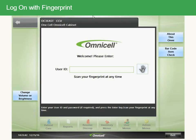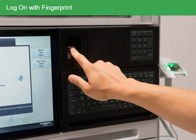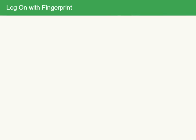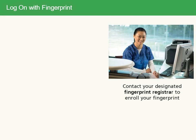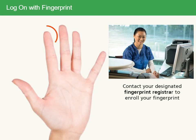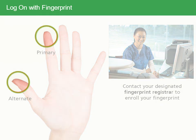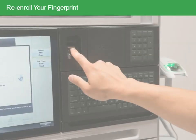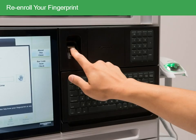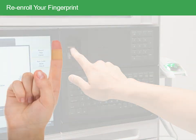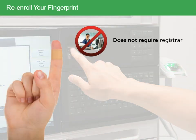Let's have a closer look at logging in with your fingerprint. If you have never been enrolled, contact your designated fingerprint registrar to help you enroll your fingerprints. You can enroll two fingers — a primary and an alternate — and you can use either finger to log on; you are not required to use both. You may need to re-enroll your fingerprint if, for example, you cut or burn a finger.